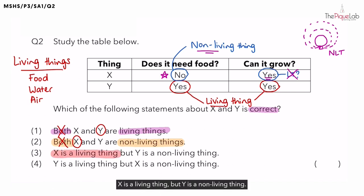Number three, X is a living thing but Y is a non-living thing. Is this statement correct? This seems to be the opposite of what we have identified, right? X is a non-living thing. Y is a living thing. Therefore, the correct answer for this question should be number four. Y is a living thing but X is a non-living thing. This is the correct answer for this question.